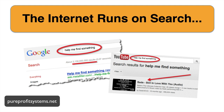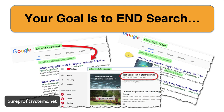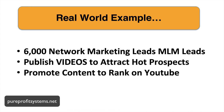Go to Google, Bing, Yahoo, YouTube — help me find something. Your goal is to make sure your content ranks top 10, number one, two, or three, so that you can start driving more traffic, MLM leads, and sales signups to take your business to the next level.